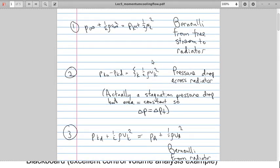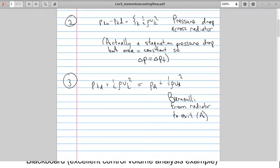There's a pressure drop across the radiator. This is given by the loss coefficient times the dynamic pressure at the radiator. This is really a stagnation pressure drop, but the area is constant. So the static pressure drop equals the total pressure drop. And then we also can use the Bernoulli equation from the radiator to the exit because we're not considering a fan here.